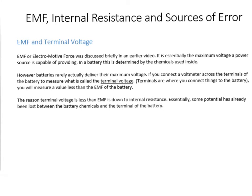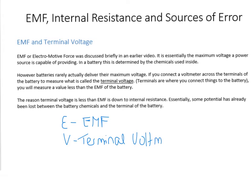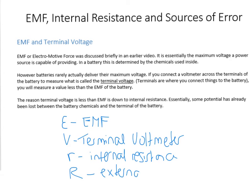There are a few symbols that are going to be used from now on. This symbol here is the symbol for EMF. When we're dealing with EMF, the V symbol stands for terminal voltage. So if you connect a voltmeter or some other meter to the battery, you actually measure the terminal voltage. I stands for current as usual. You'll see little r, which is internal resistance, and big R, which is an external resistance.